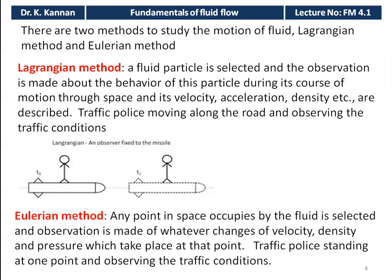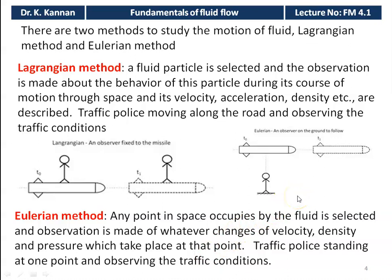In the Eulerian method, the observer is fixed at a particular position. Any point in space occupied by the fluid is selected, and observations are made of changes in velocity, density, and pressure at that point. The analogy is a traffic pole standing at one point observing traffic. In fluid mechanics, we follow only the Eulerian method — measuring all properties such as pressure, density, velocity, acceleration, and viscosity at a particular location.